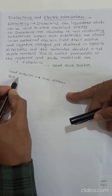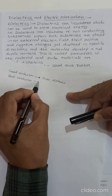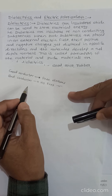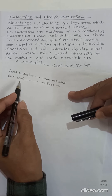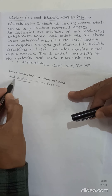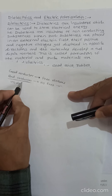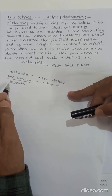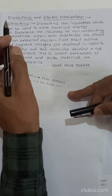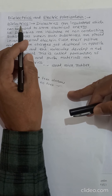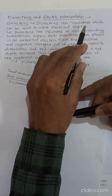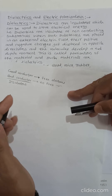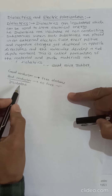The second category is bad conductors. Bad conductors are substances having no free electrons. Such substances are also called insulators. Dielectrics are insulators which can be used to store electrical energy. Dielectric substances are non-conducting substances or insulators.